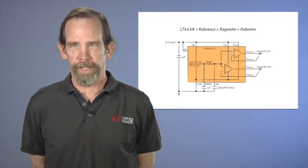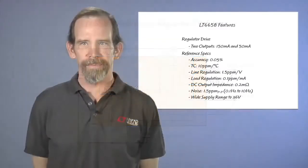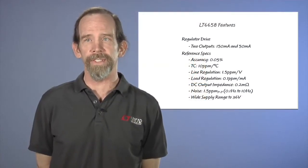The LT6658 consists of a precision band gap circuit and two precision low drift buffers capable of sourcing 150 milliamps and 50 milliamps. Each buffer has a separate supply pin for electrical isolation and a separate Kelvin sense feedback pin for superior load regulation. There's a noise reduction pin for noise-sensitive applications and an output disable pin to place the outputs in a high impedance state.